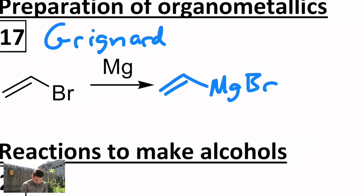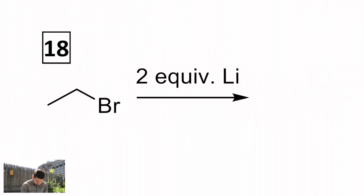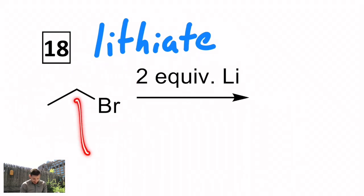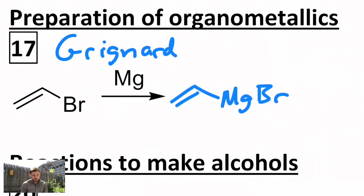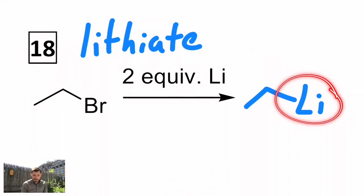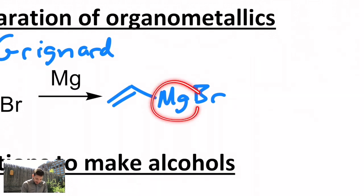Right next to it is called a lithiate. This also starts with a halide. I'm arbitrarily using an sp3 halide as opposed to an sp2 halide, just to show you that both of those are possible. A lithiate replaces the bromine with a lithium atom. Notice lithium group one, so a valency of one, as opposed to magnesium group two. So a valency of two.